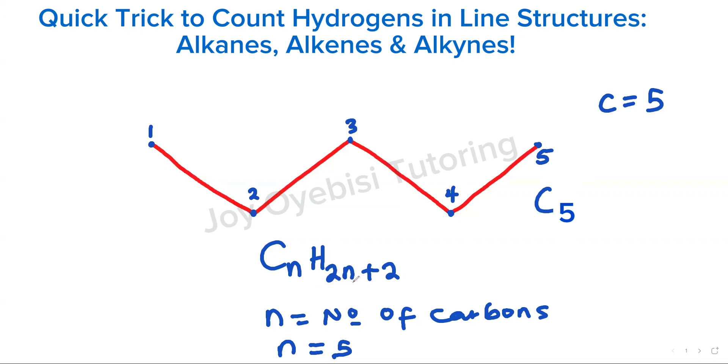Your hydrogens would then be 2 times 5, 10, plus 2, 12, which means I have a total of 12 hydrogens. So this way you can figure out the molecular formula and also the number of atoms involved.